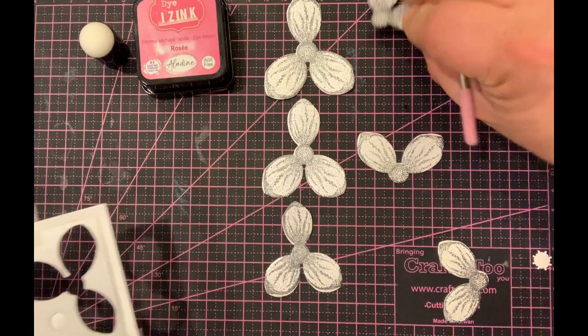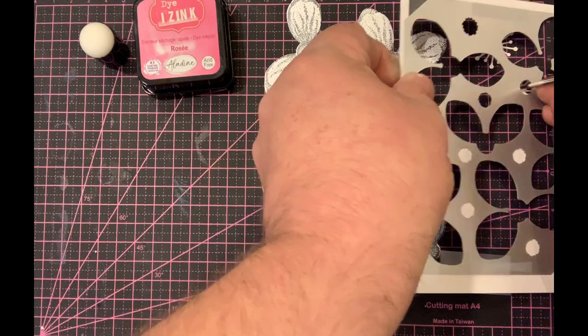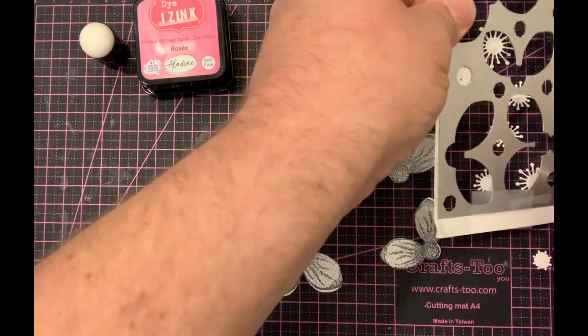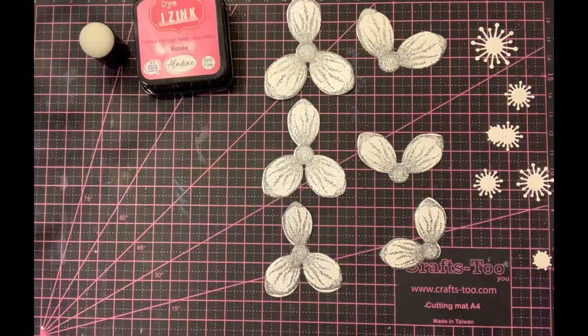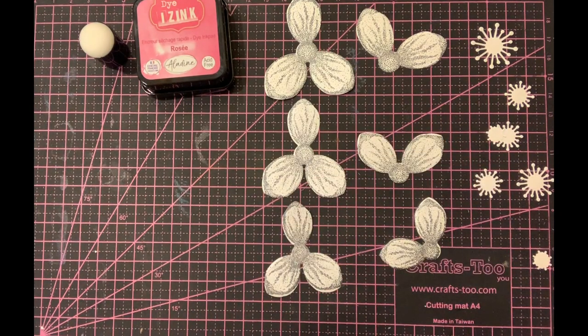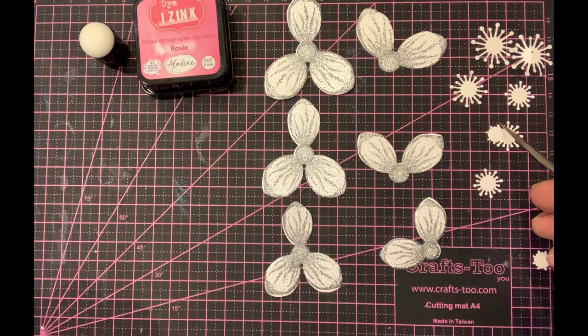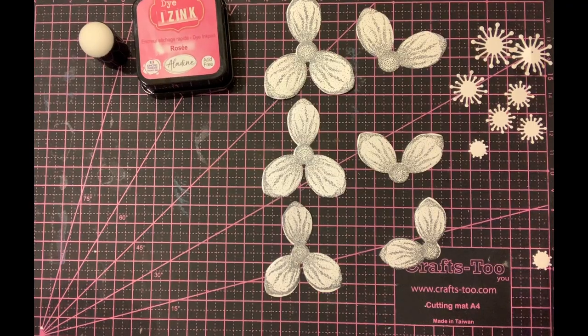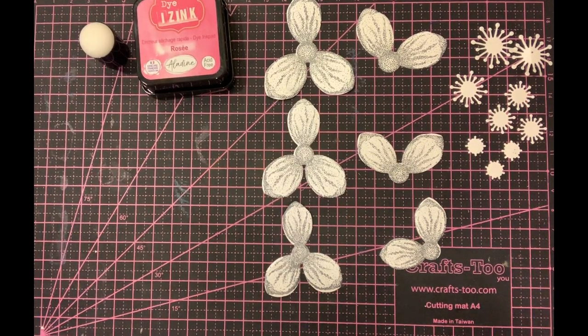The die also has a bonus in that it gives you nine centers for the flower, allowing you to use two or three for each flower or use them for other flowers in the John Next Door range. I've got three large stamens, three smaller, and then three of the center. For this project we won't actually be using the center one, but it's there if you want it.